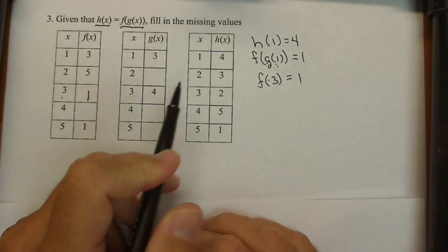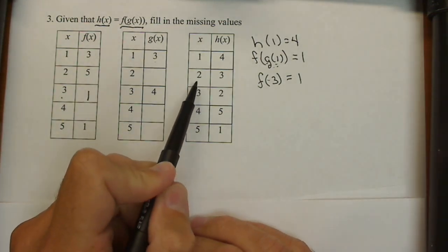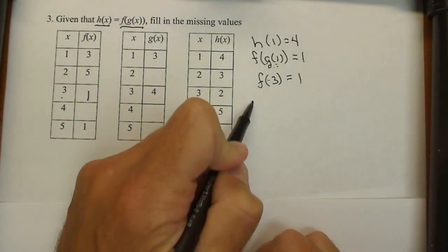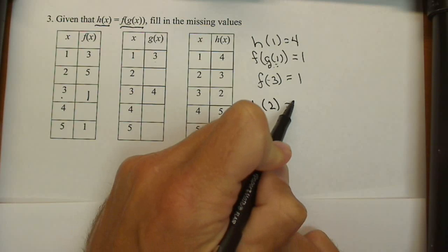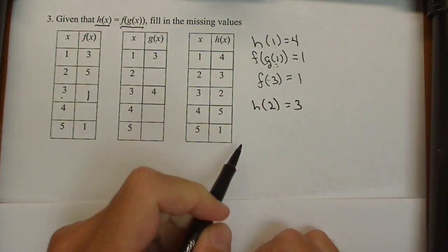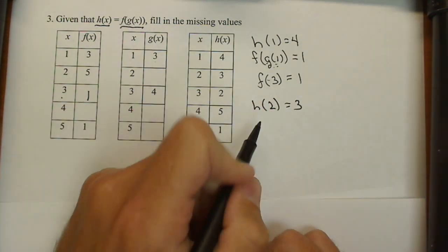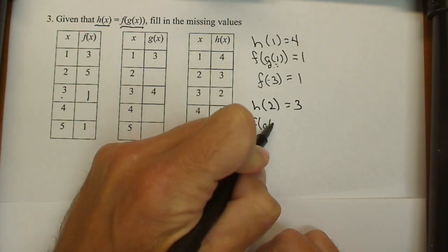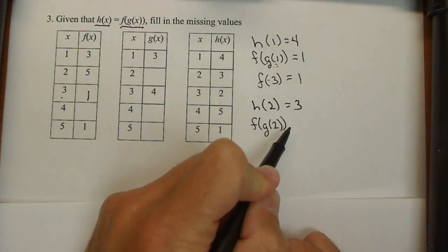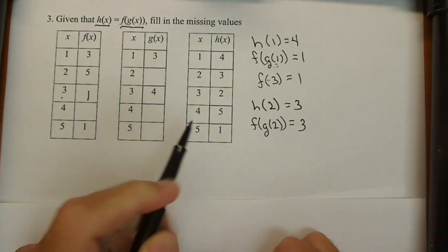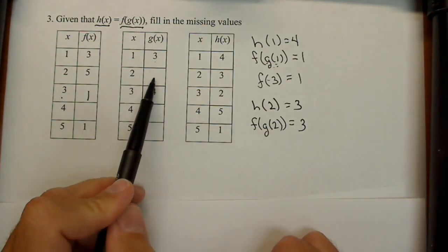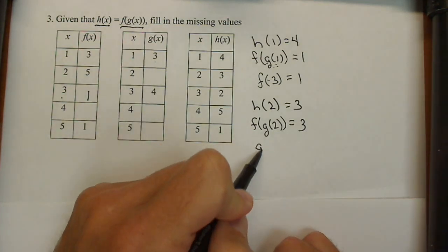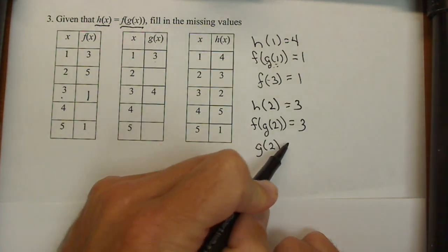And we just kind of work our way down. So the next one: h(2) equals 3. That means f(g(2)) must equal 3. All right, so let's see - what is g(2)? We don't know g(2), we're not sure what it is.